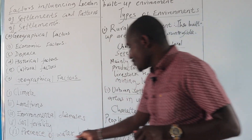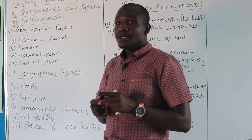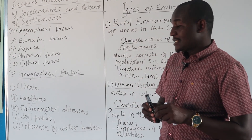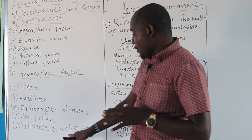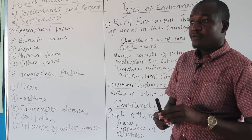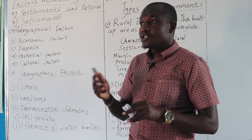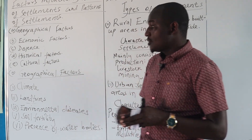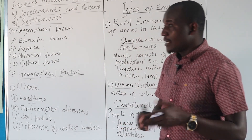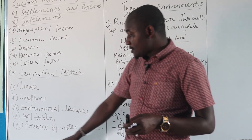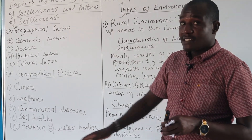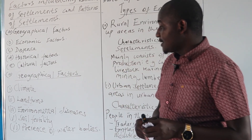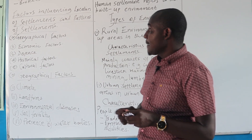The last geographical factor is the presence of water bodies. Water is one of the basic commodities that human beings need for their sustenance. Areas which have water bodies — like rivers, lakes, ponds, and seas — will always attract settlements because water is available for both domestic and industrial use. People will also settle to venture into business activities because there is enough water for industrial activities. These are some of the geographical factors that influence settlement patterns.